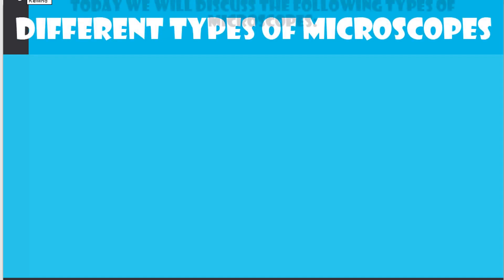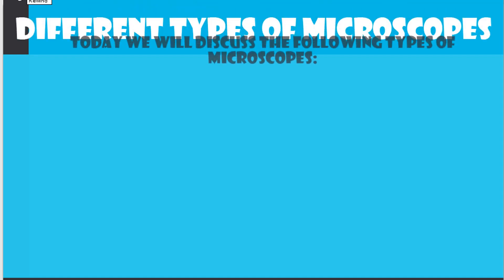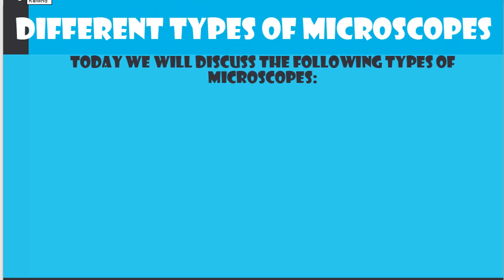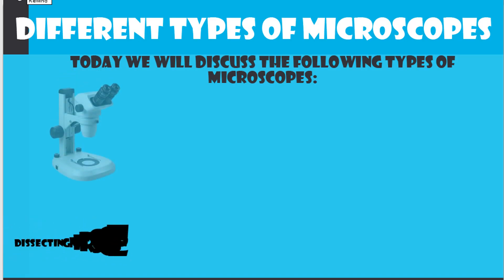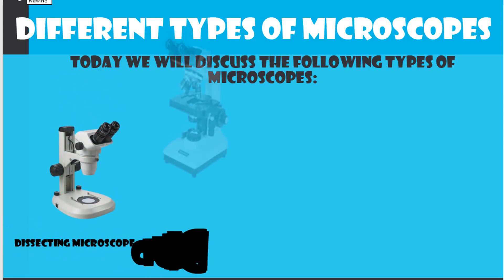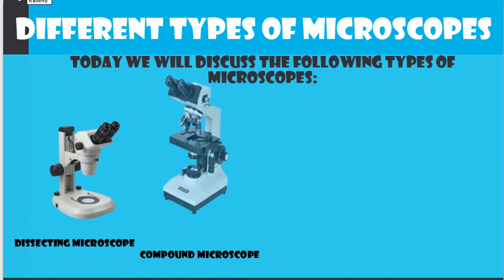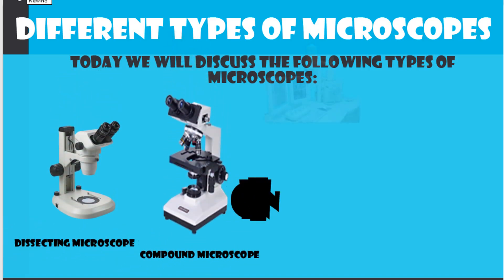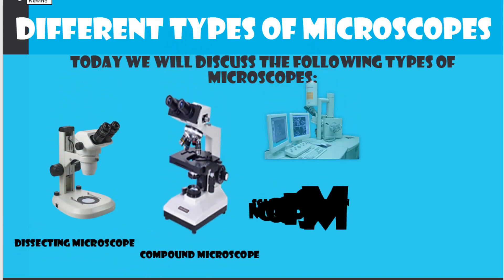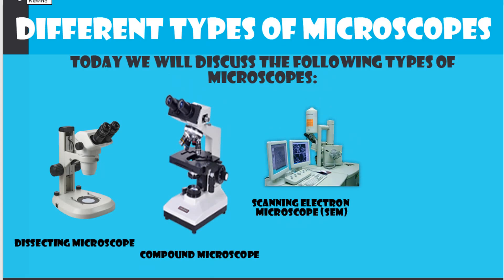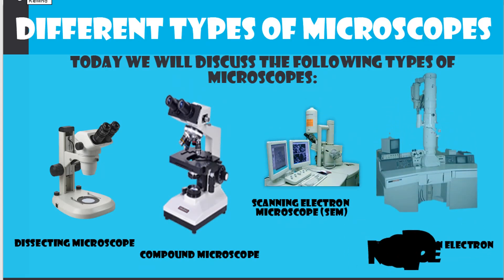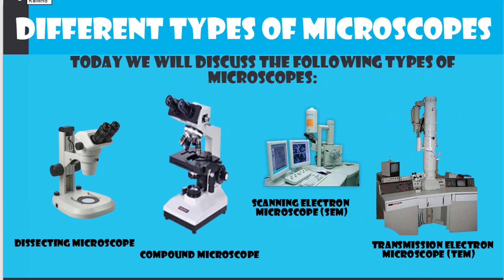Different types of microscopes. Today we will discuss the following types of microscopes: the dissecting microscope, the compound microscope, the scanning electron microscope or SEM, and the transmission electron microscope or TEM.